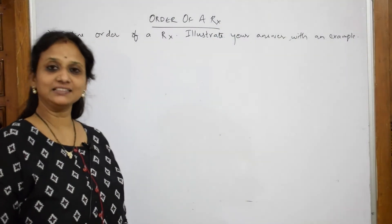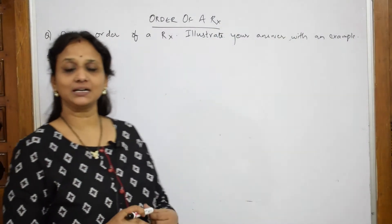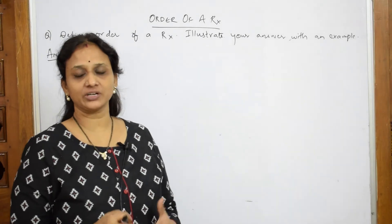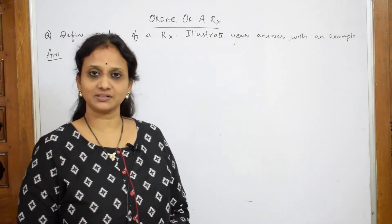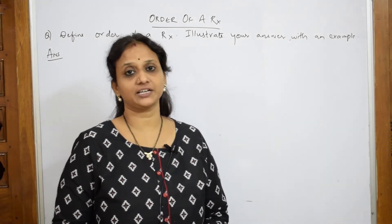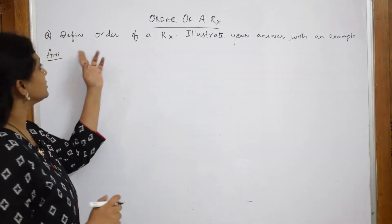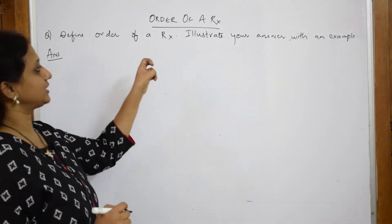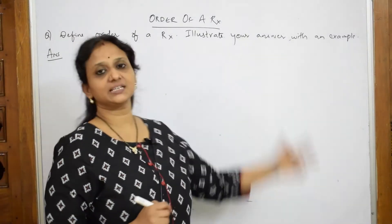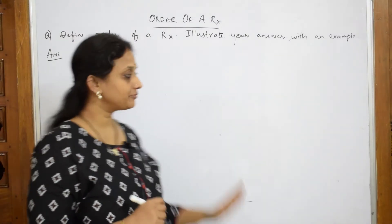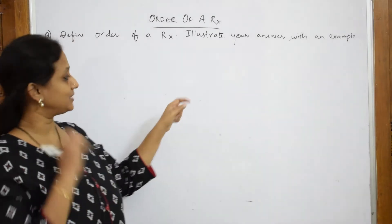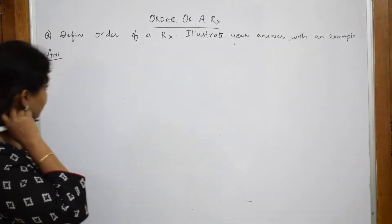Let us come back and learn the next topic after rate law and rate constant. Now let us learn this topic called order of a reaction. Let us see this question: Define order of a reaction and illustrate your answer with an example. I will write the example first, then I will try to define it.